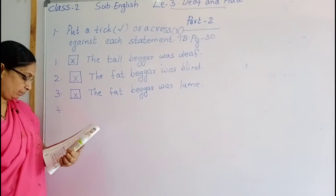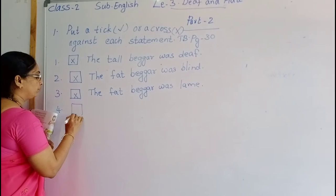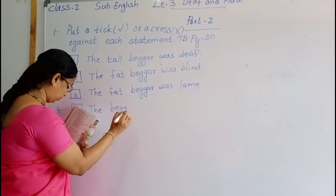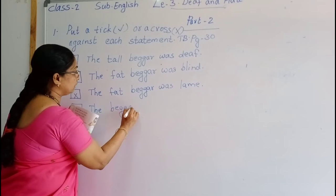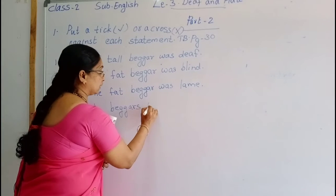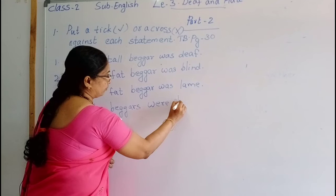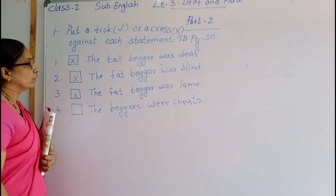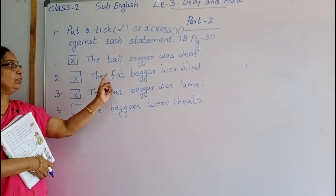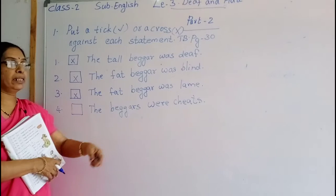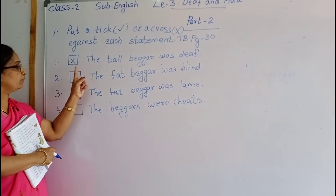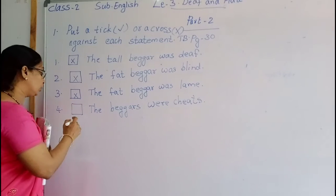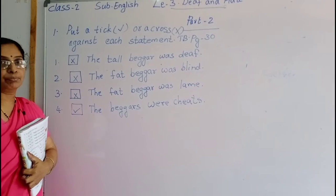Number four: the beggars were cheats. They were cheating others. The tall beggar said 'I am deaf,' the fat beggar said 'I am blind and lame,' but actually they are not deaf, blind, or lame. They were cheating. So the last statement is correct.